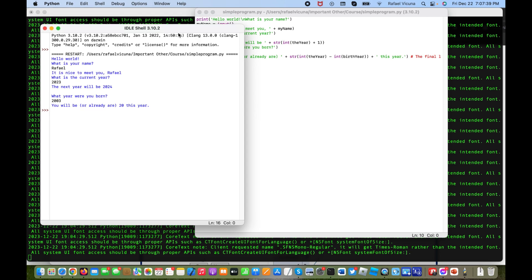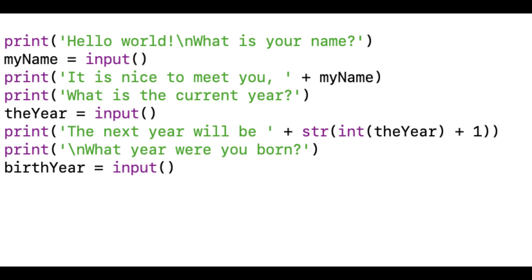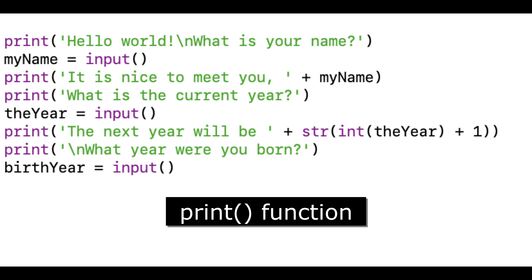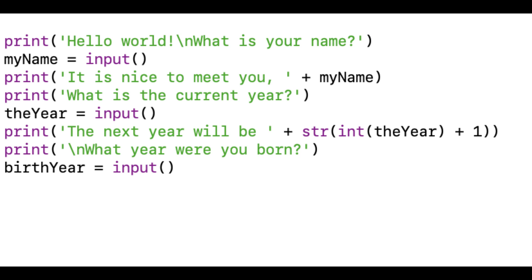Let's go ahead and break down this program. Python programs start at the top and move down, so the first thing that was called was the print function on top that says 'Hello World\nWhat is your name?' Now if you notice, when we called the program those two lines were separate, despite the fact that they're both in the same function.